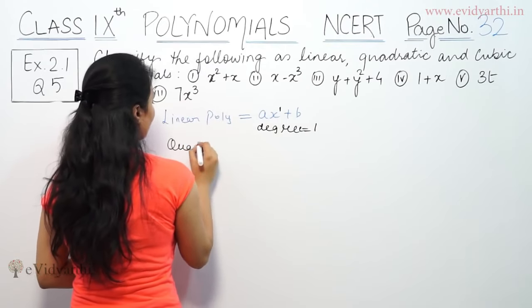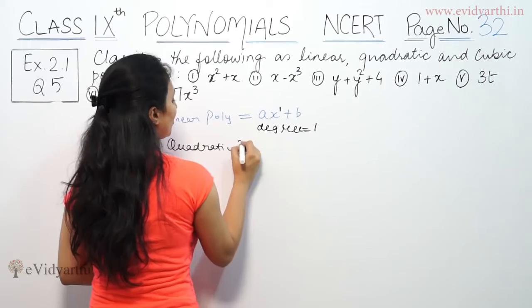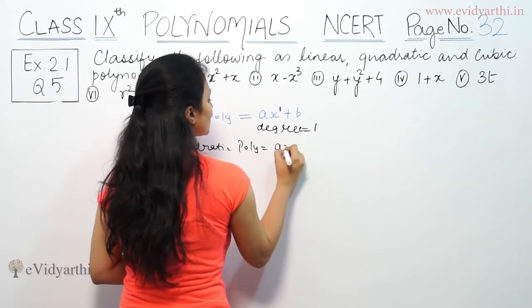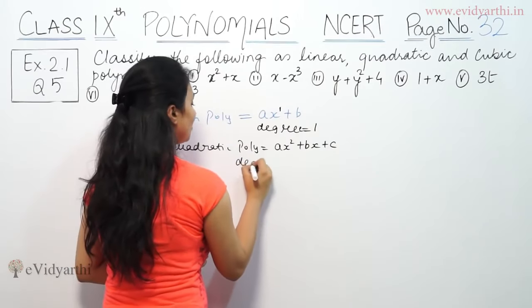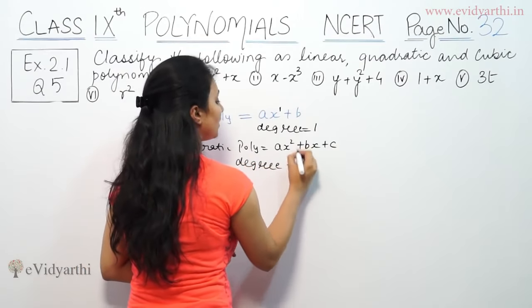Next, quadratic. Quadratic polynomials are like ax² plus bx plus c, which has degree 2. That means highest power is 2.